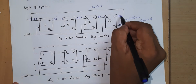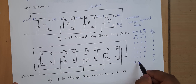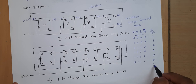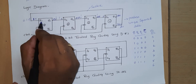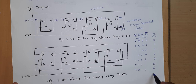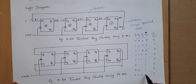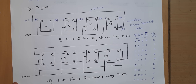After the fifth clock pulse, Q4 is 1 so Q4-bar is 0. This 0 feeds to D1, so Q1 becomes 0. State is Q1=0, Q2=1, Q3=1, Q4=1. After the sixth clock pulse, Q4 is still 1 so Q4-bar is 0 again. State is Q1=0, Q2=0, Q3=1, Q4=1. After the seventh clock pulse, state becomes Q1=0, Q2=0, Q3=0, Q4=1. After the eighth clock pulse, state returns to Q1=0, Q2=0, Q3=0, Q4=0.